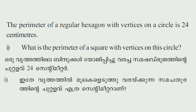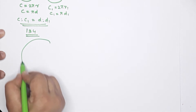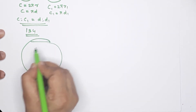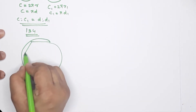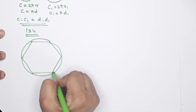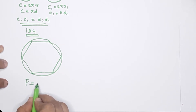Here is a problem: The perimeter of a regular hexagon with vertices on a circle is 24 centimeters. What is the perimeter of a square with vertices on this same circle? In this circle, there is a regular hexagon, and the perimeter of the regular hexagon is 24.